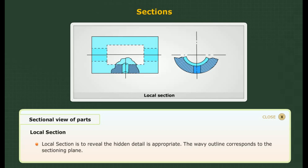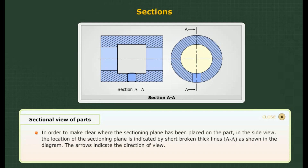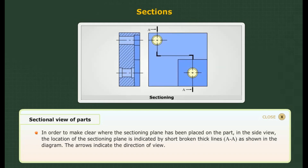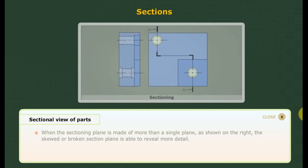Local section: Sometimes a local section to reveal hidden detail is appropriate. The wavy outline corresponds to the sectioning plane. To make clear where the sectioning plane has been placed on the part in the side view, its location is indicated by short, broken, thick lines AA as shown in the figure. The arrows indicate the direction of view. When the sectioning plane is made of more than a single plane, the skewed or broken section plane is able to reveal more details.